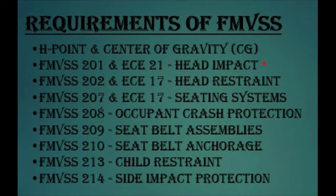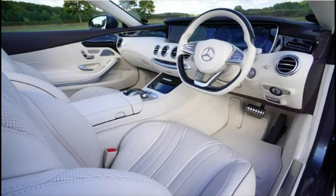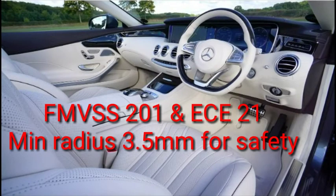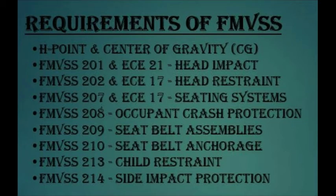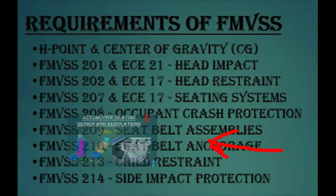FMVSS 201 is equivalent to ECE R21 — occupant protection in interior impact. During vehicle impact, occupant protection is necessary, so this regulation must be followed. FMVSS 202 is equivalent to ECE R17 — head restraint strength. FMVSS 207 is equivalent to ECE R14 — the seating system. We need to go through the complete FMVSS regulations.